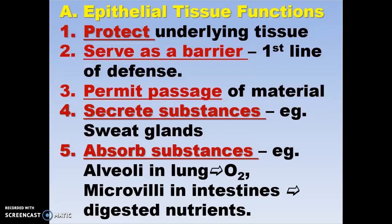They do permit passage of material. They're thin enough that UV can come through, and the superficial blood vessels bring blood to the surface where ultraviolet rays can help you create vitamin D. And the simple squamous are thin enough that oxygen can pass through in your lungs. They secrete substances — your sweat glands are made up of epithelial tissue. They absorb substances, such as the alveoli in the lung and the microvilli in the intestines, so nutrients are absorbed through them.